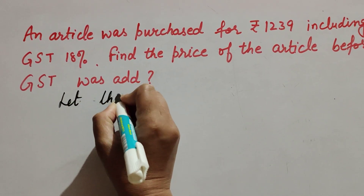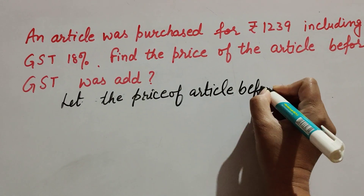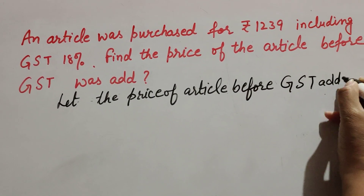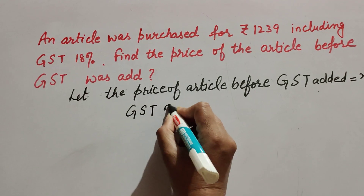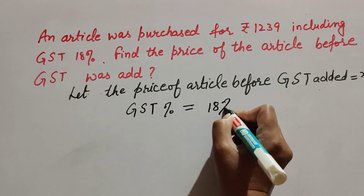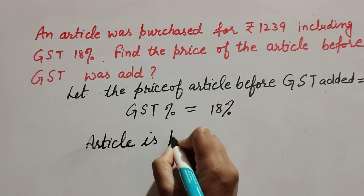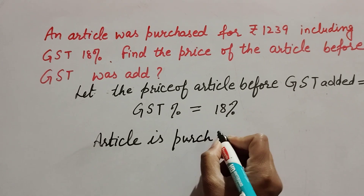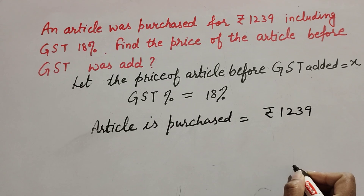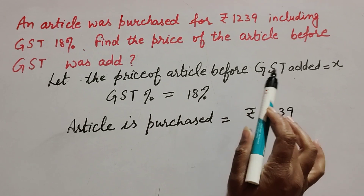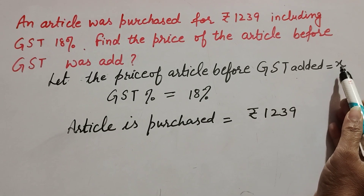Let's start. Let we suppose the price of article before GST is added is equal to x, because that is what we have to find. GST percentage given is equal to 18%, and article purchased with GST is equal to rupees 1239.